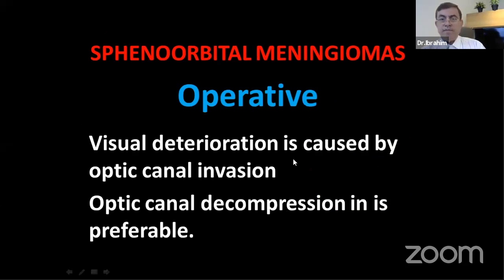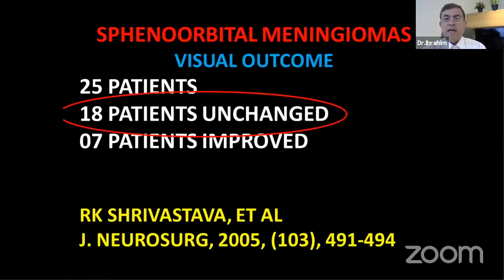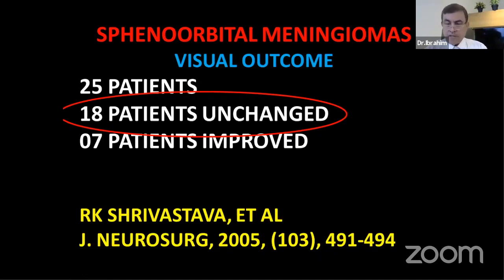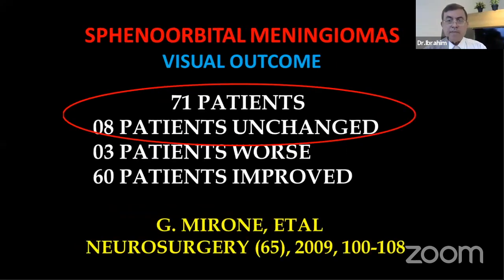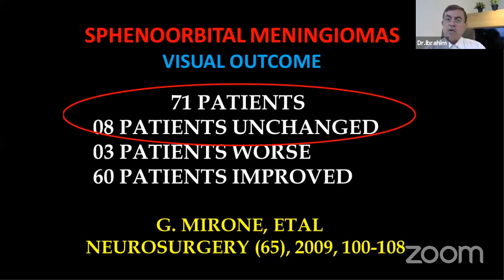During surgery for this tumor, because most patients present with visual deterioration, you may need to open the optic canal to decompress the nerve. A 2005 paper with 25 patients showed 18 were visually unchanged. A 2009 paper by Mirone with 71 patients showed 8 unchanged but 60 improved — so surgery is valuable. Outcome depends on surgical skill and how long the optic nerve was compressed.